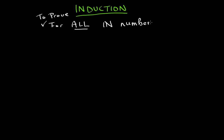You might think to yourself: I can prove something works for number one, and then I can prove it works for number two, and then just say if it works for this, then it works for everything. But that's not how it works. You want to have some sort of concrete method to prove it for all of them.